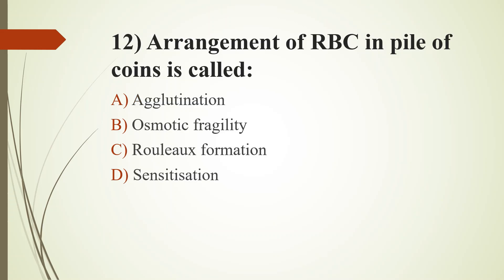Twelfth question: Arrangement of RBC in pile of coins is called — Option A: agglutination. Option B: osmotic fragility. Option C: Rouleaux formation. Option D: sensitization. Answer is Option C, Rouleaux formation. RBC arranged in pile of coins or stacks of coins is called Rouleaux formation. Increased fibrinogen and immunoglobulin in blood causes Rouleaux formation. This is a normal finding in blood of healthy horses and some cats.